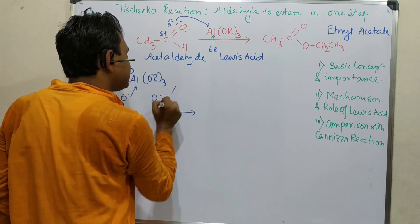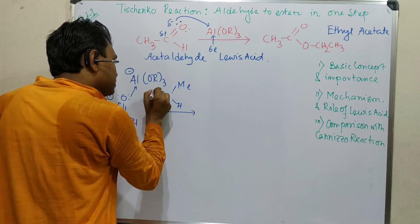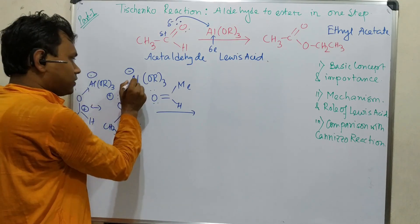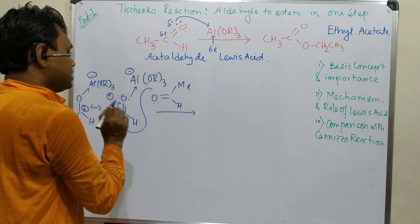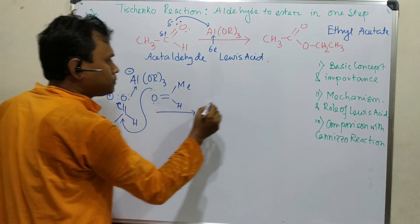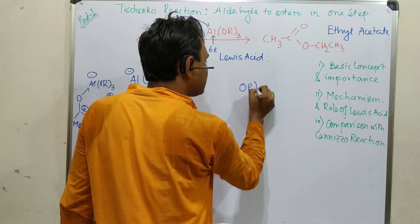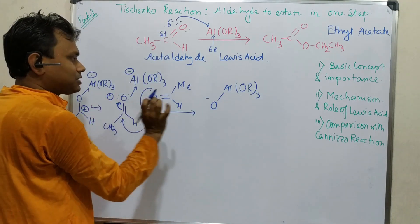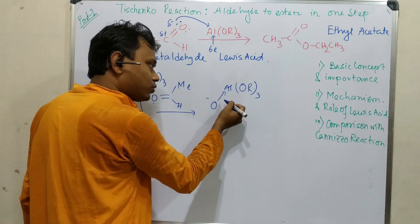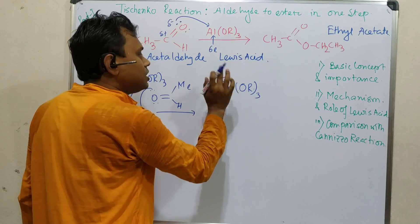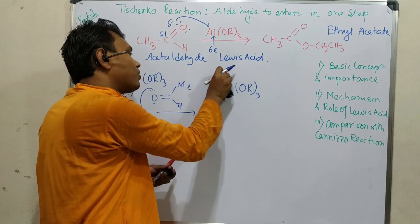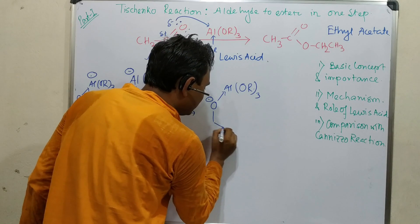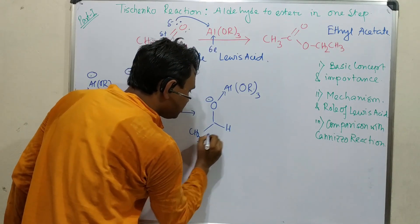Because of this enhanced electrophilicity, a second molecule of the aldehyde attacks. Although the aldehyde oxygen is not very nucleophilic by itself, the extreme electron deficiency at the aluminum center drives the attack. After the second aldehyde oxygen attacks, the C=O bond opens to produce an Al(OR)₃ intermediate with a negative charge on the newly formed oxygen.